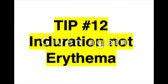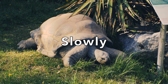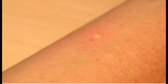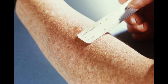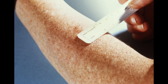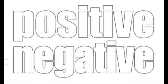Tip number twelve: induration, not erythema. Understanding that erythema or redness of the site is not what you're reading — that's a big misconception that is slowly getting corrected. Induration is the thickening, swelling, and hardness under the skin at the site where the PPD was administered. That's what will let you know if the individual likely needs to go to the next step. You should find the margins of the induration and measure that in a transverse dimension. When recording the results, do not simply write negative or positive, as this does not allow comparison of the reaction with later measurements.